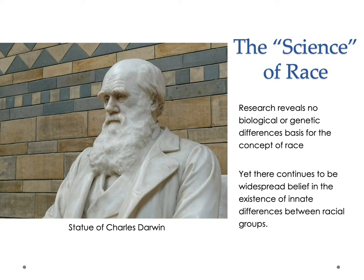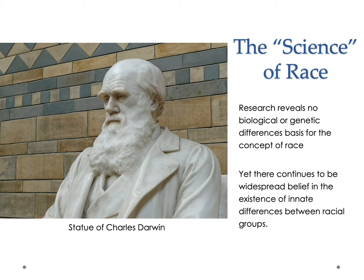This eugenics impulse was also used to justify controlling the fertility of different populations. In an earlier lecture I talked about Chinese migration to the United States, how such migration — particularly in the 19th century — was limited to men. Part of this was an attempt to control the fertility and spread of Asian people in the United States, because Asians were viewed as dangerous to whites, or dangerous to the purity of whites.